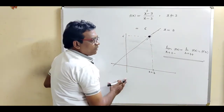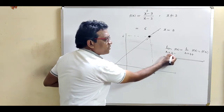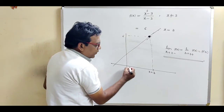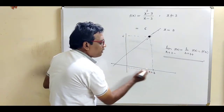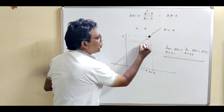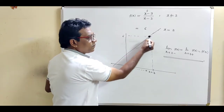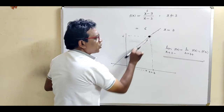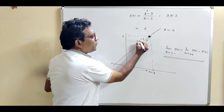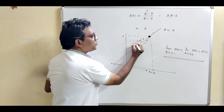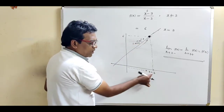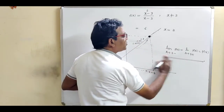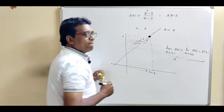The limit from left means x approaches towards 3 from the negative or left-hand direction. When we approach x equal to 3 from the left, our function approaches near about 6 — values like 5.9, 5.99, 5.9999, and so on, which are very near to 6. So the left-hand limit approaches 6 minus.